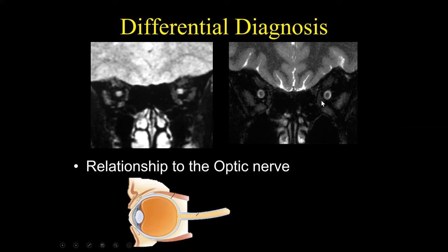Now with heavily T2-weighted images, we should be able to see a much greater level of detail. If you are looking at orbital studies, I encourage you to always do coronal T2-weighted images with fat suppression. You should be able to see this level of clarity and also see the anterior skull base and the gyrus rectus.